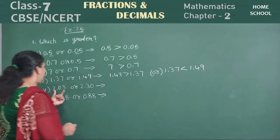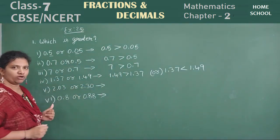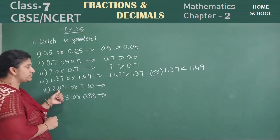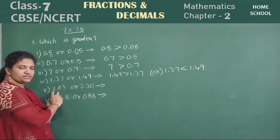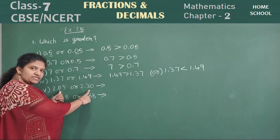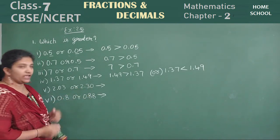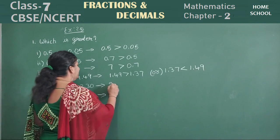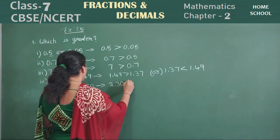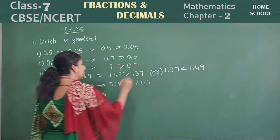Look here, next one. Two and two in the whole number part — both are same. So shift to the next value. Zero, three — zero and three, which is greater? Three is greater. So what you can write? Two point three zero is greater than two point zero three.